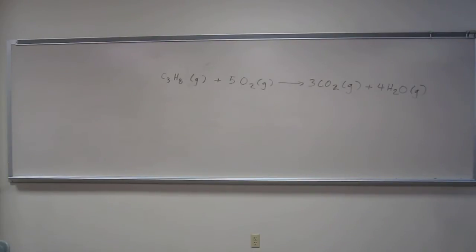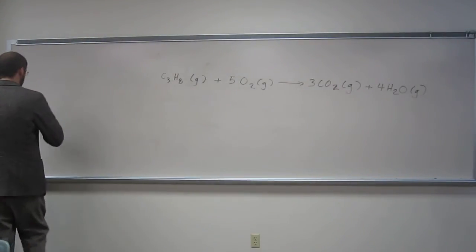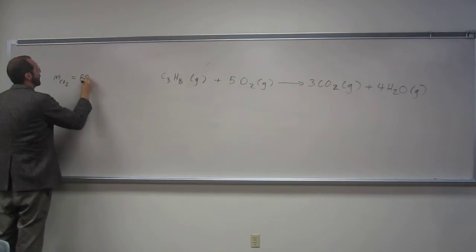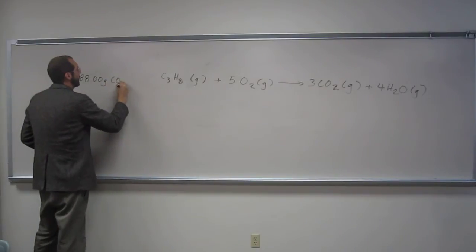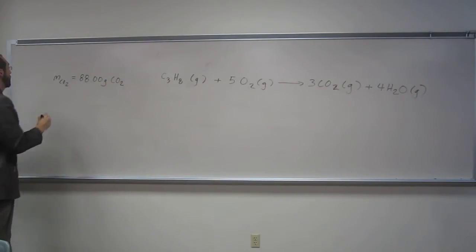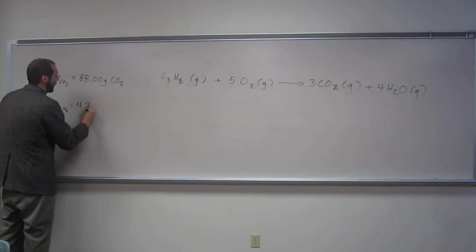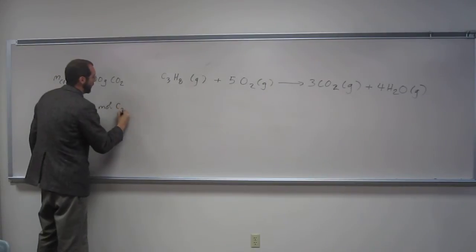88.00 grams of carbon dioxide. So, the mass of carbon dioxide is 88.00 grams of CO2, and the number of moles of propane that we started out with was 4.30 moles of C3H8.